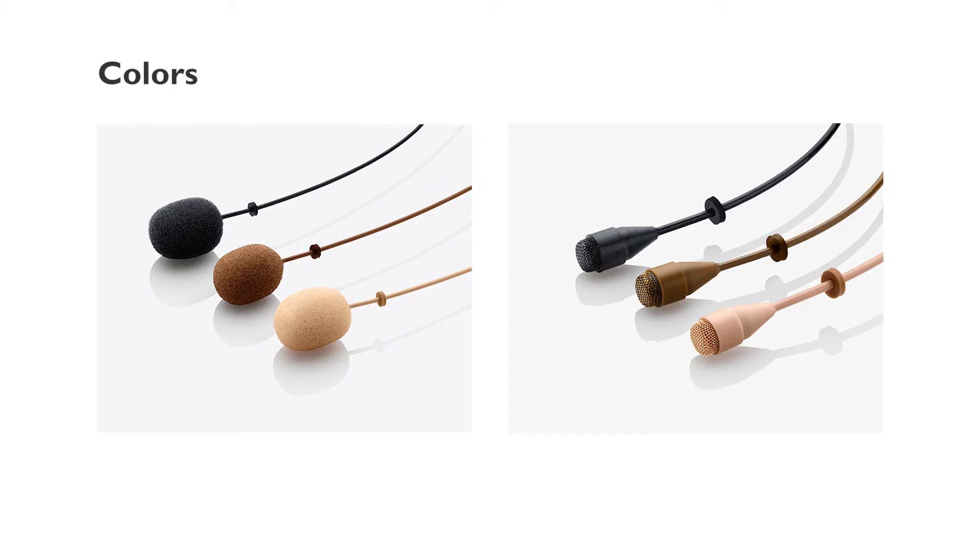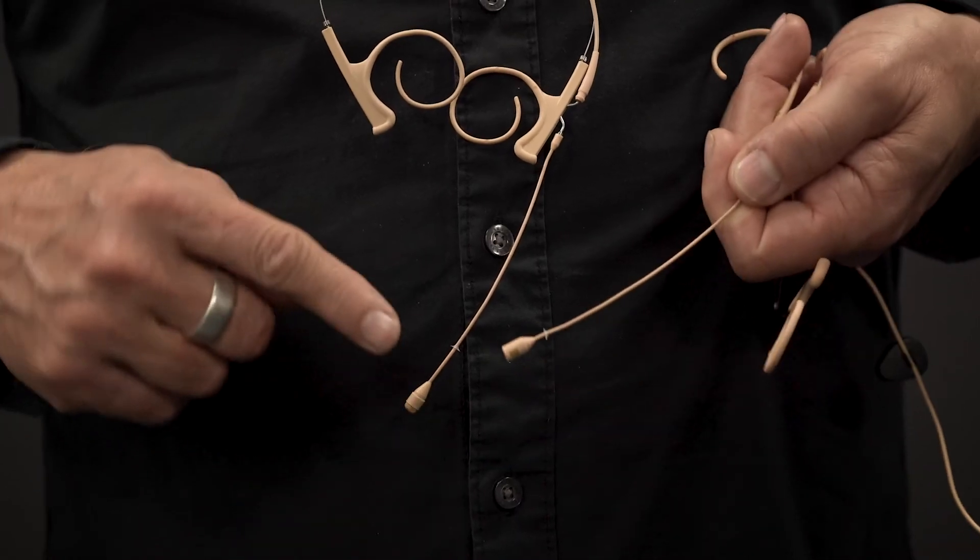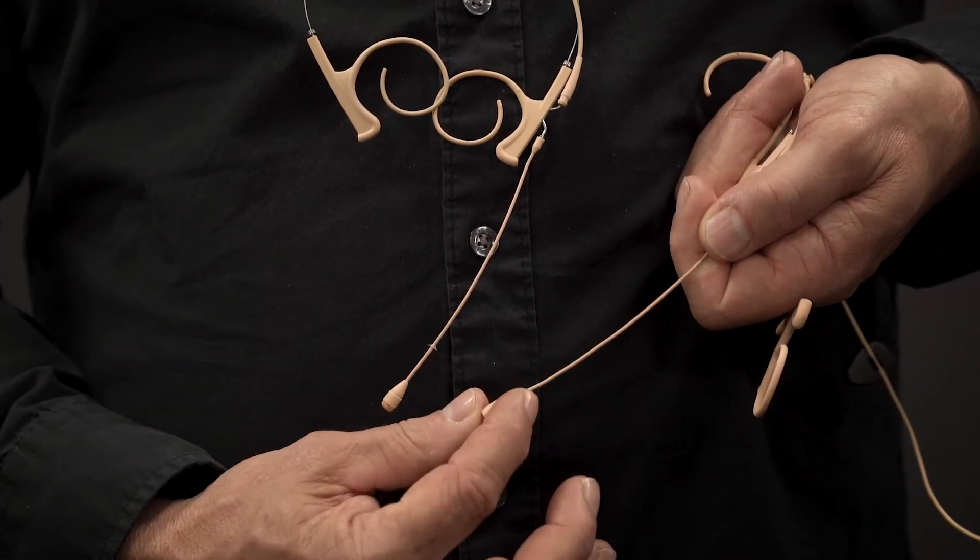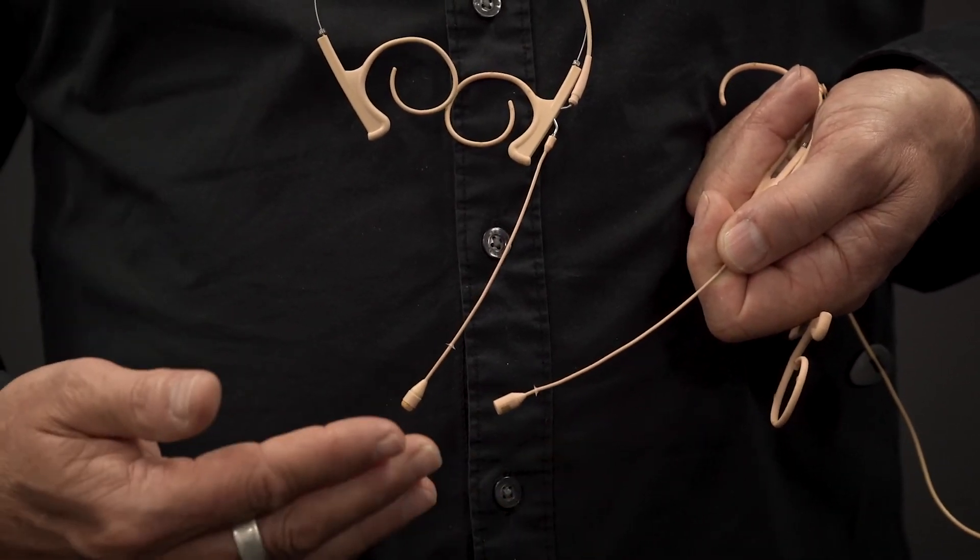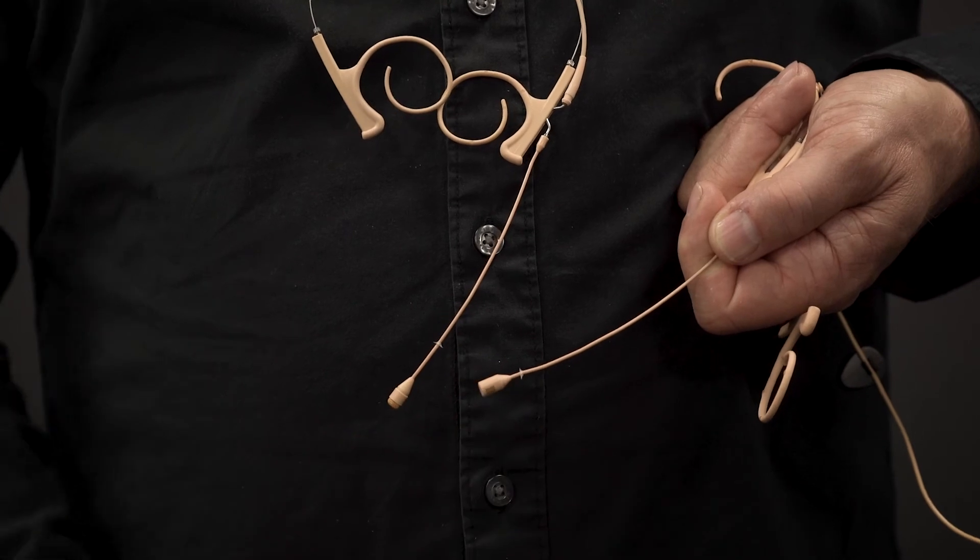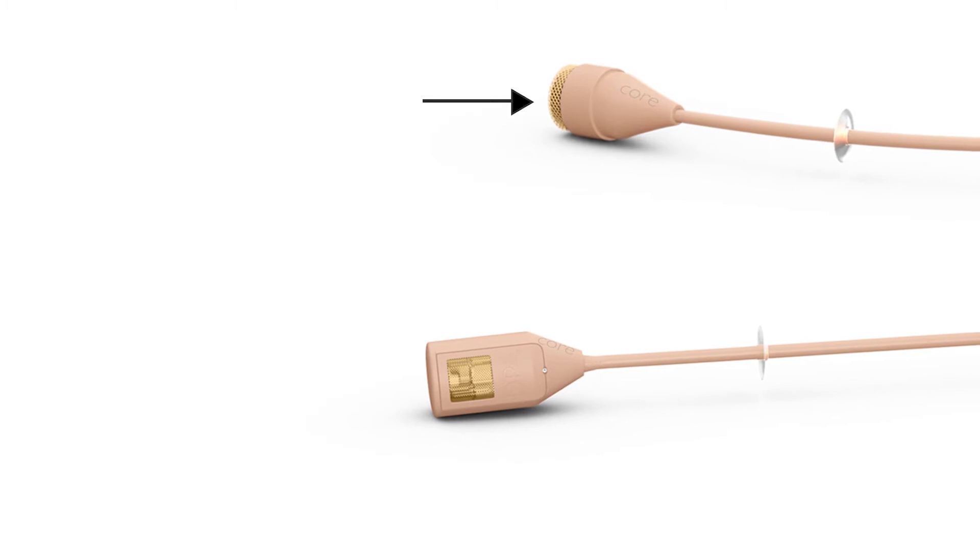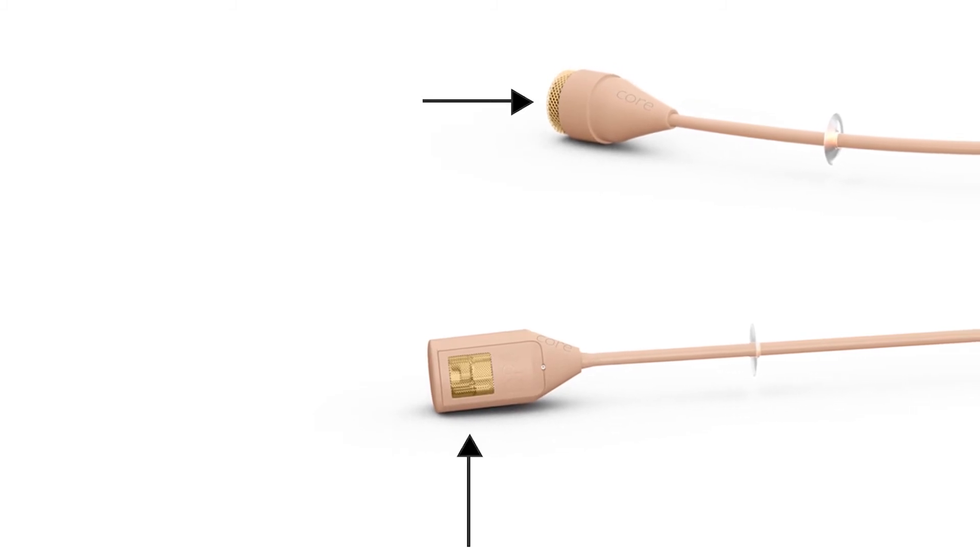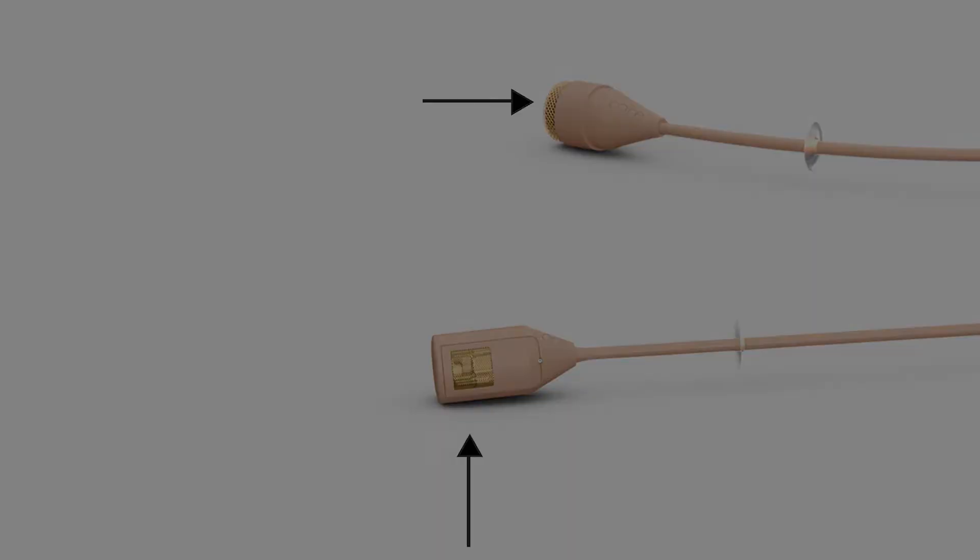All the omnis and all the directional headsets come in these three colors. The omnidirectional version of the microphone looks like this. The directional version looks like this with a small bend bending the microphone backwards so the entry is pointing at the mouth. You can recognize the omni by the entry holes in front of the capsule, and the directional has the entry on the side of the capsule.